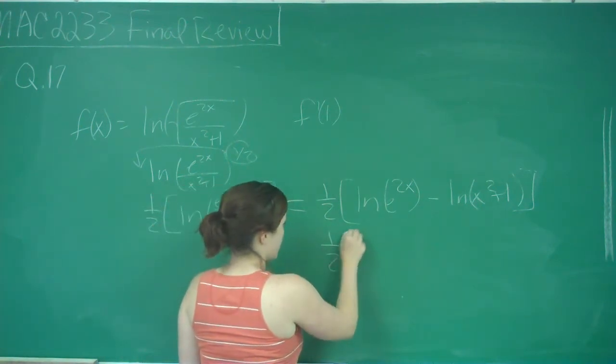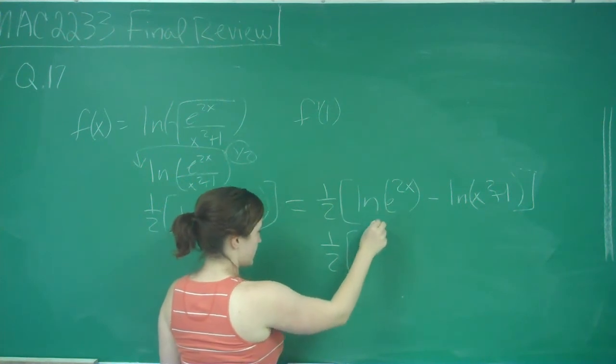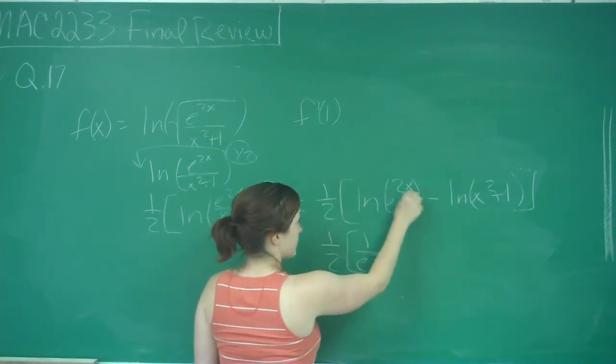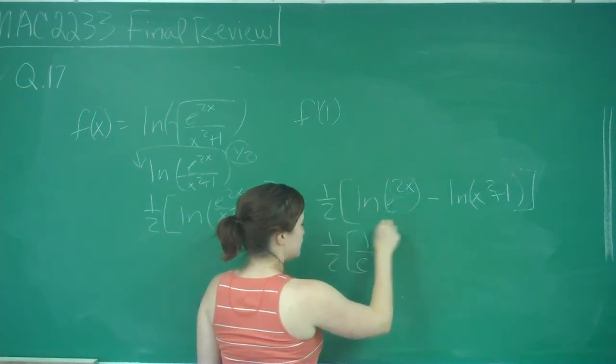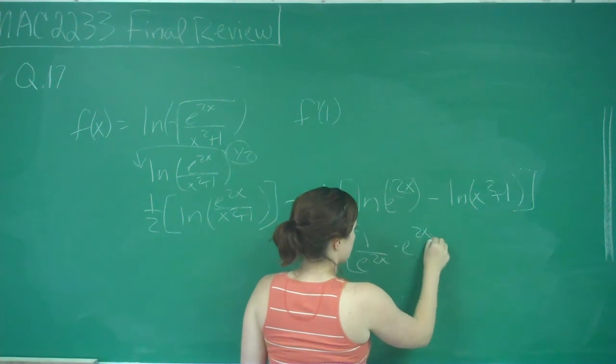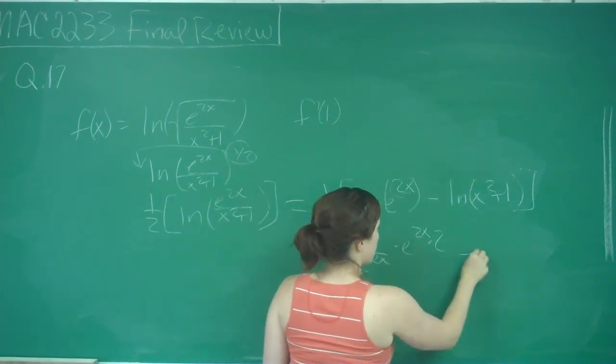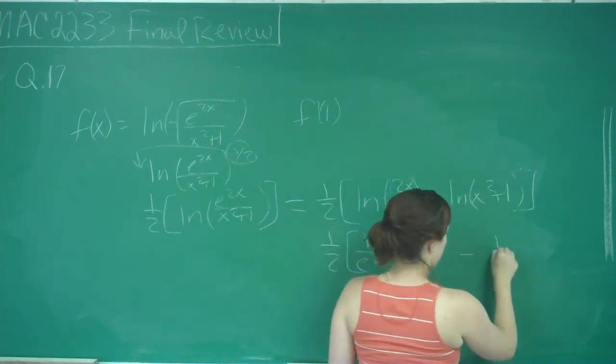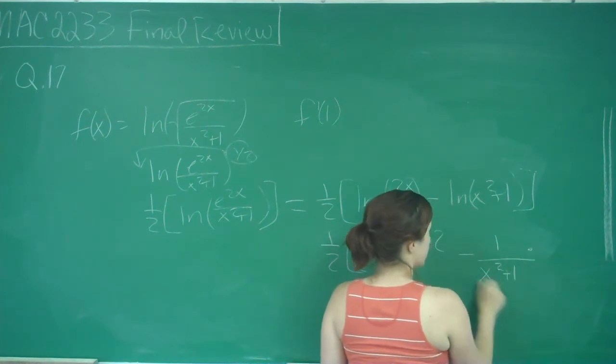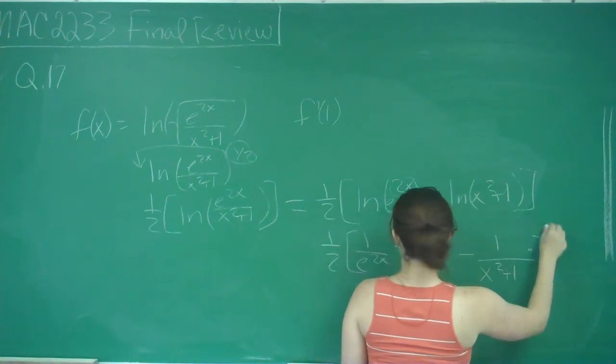I leave my 1 half out here. Derivative of ln of e to the 2x is 1 over e to the 2x times the derivative of my function, which is e to the 2x times 2 minus, same goes here, we have 1 over x squared plus 1 times the derivative of x squared plus 1, which is 2x.